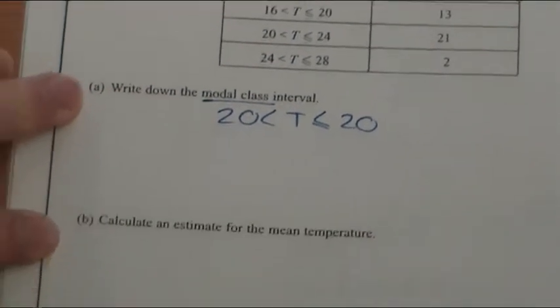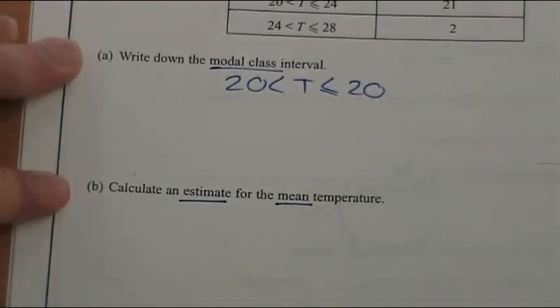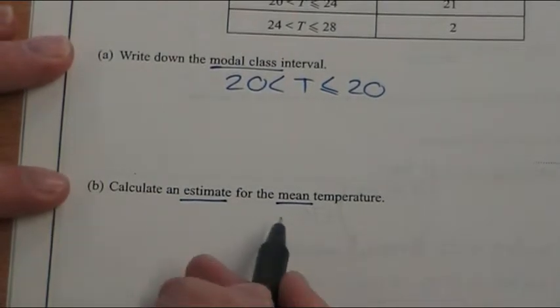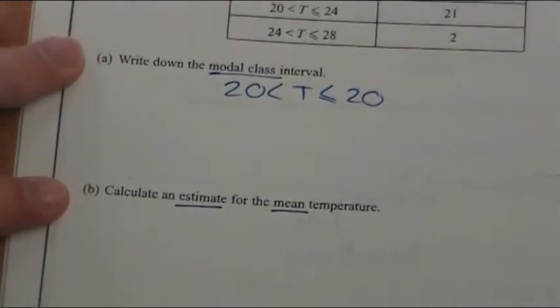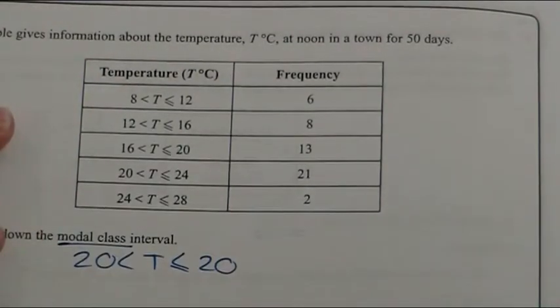But the four marks come from the harder stuff, which is the estimate of the mean. Now, you should know, to find the mean average, you add them all up and divide by how many there are. The problem is, we have a group, so we don't know the actual temperatures to add up.